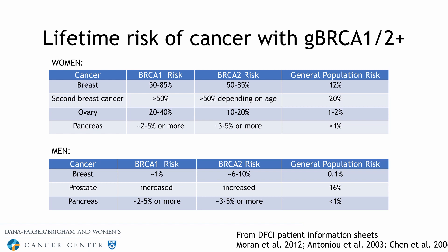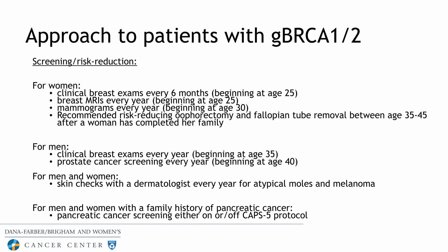For men with BRCA, there is also increased risk for male breast cancer, prostate cancer, and pancreatic cancer. Both men and women are at increased risk for skin cancer, so we recommend annual skin evaluations. For women with BRCA, we do clinical breast exams every six months beginning at age 25, breast MRIs every year beginning at age 25, mammograms every year starting at age 30, and recommend risk-reducing oophorectomy and fallopian tube removal between ages 35 and 45 after a woman has completed her family.